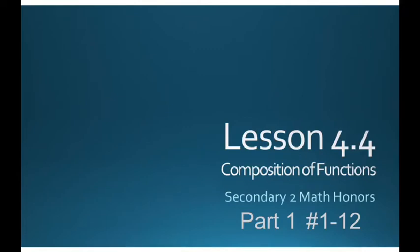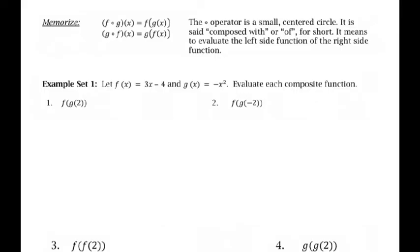This is part 1 of Lesson 4.4. Today we're going to talk about composition of functions. The first thing we're going to do is talk about the notation. We've got this little dot — it looks kind of like a multiplication but it's open — and that is a composition operator. This operator is a small centered circle meaning 'composed with' or 'of' for short. It means to evaluate the left side of the function of the right side of the function.